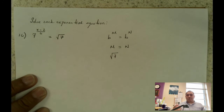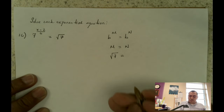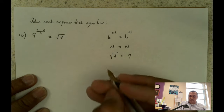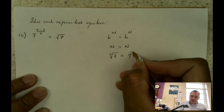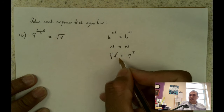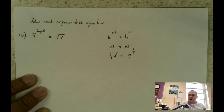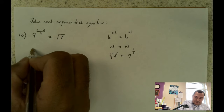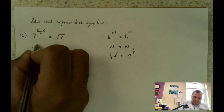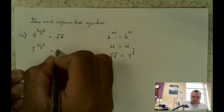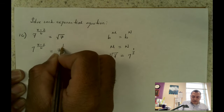Remember that the square root of 7 is the same as an exponent in the form of a fraction. The square root means the index is 2, so the denominator is 2 and the exponent is 1. So it's 7 to the 1 half. So I can do that manipulation first. So I have 7 to the x minus 2 over 6 equals to 7 to the 1 half.